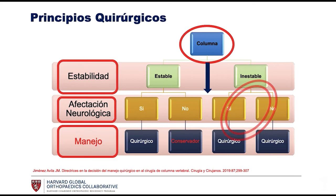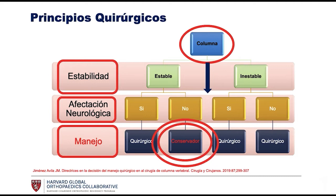Surgical principles are based on this scheme. When we have a patient with spinal injury, the first question we must ask ourselves is whether the spine is stable or unstable. If the spine is stable and does not have neurological involvement, management can be non-operative. On the other hand, if it is stable but with an associated neurological deficit, then we must decide on surgical management. For all unstable fractures, whether or not they have neurological involvement, we must think of surgical management.